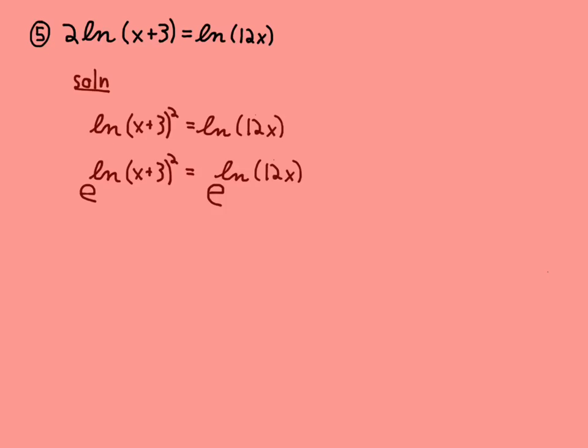Then the e to the ln will cancel on both sides, and I get x plus 3 squared equals 12x.